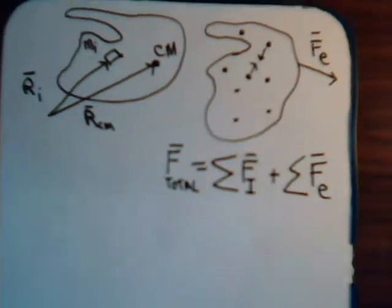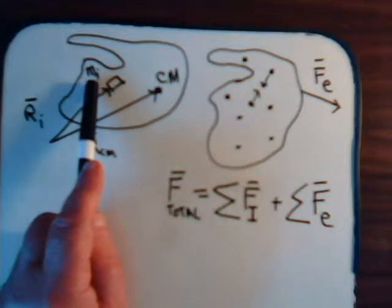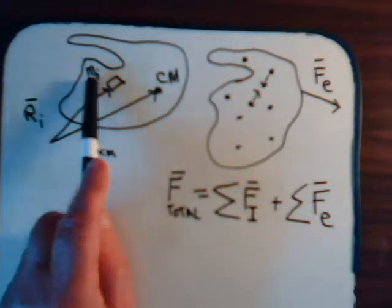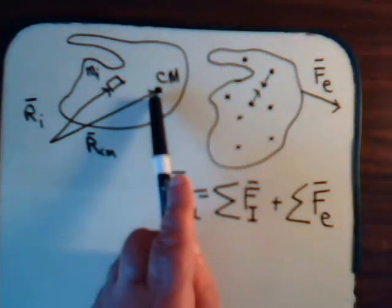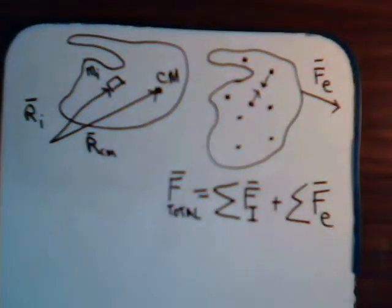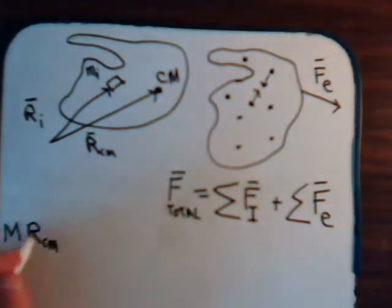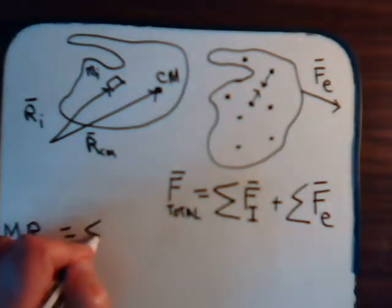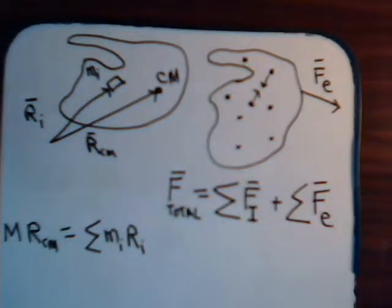Here we have an object, and we imagine it being comprised of discrete masses — a lot of them. This is just a particular one, mi, with its position vector ri. And here is the center of mass with its position vector r. By the definition of the center of mass we know that M times the magnitude of that position vector equals the sum of mi times the magnitude of their position vectors.